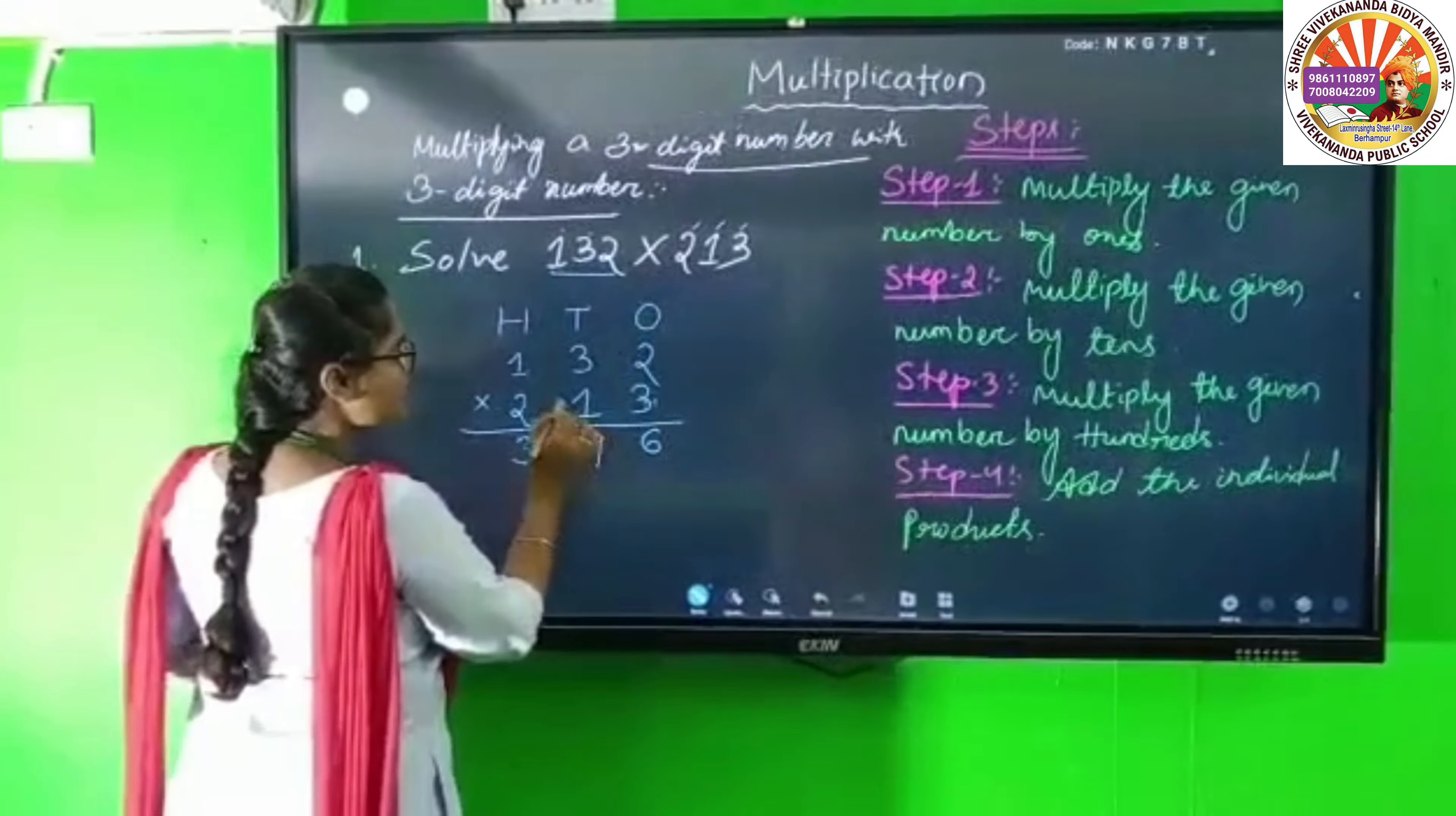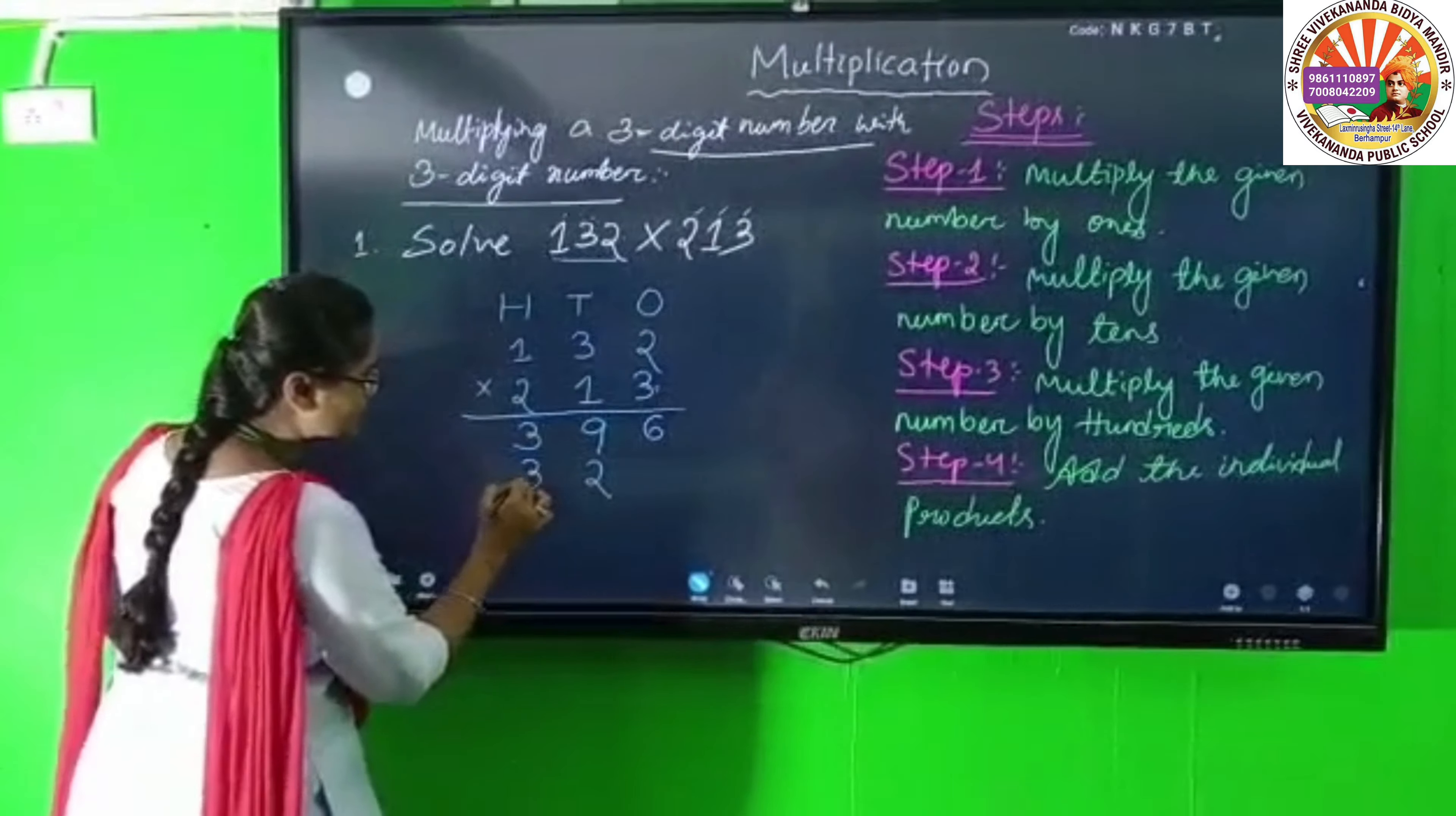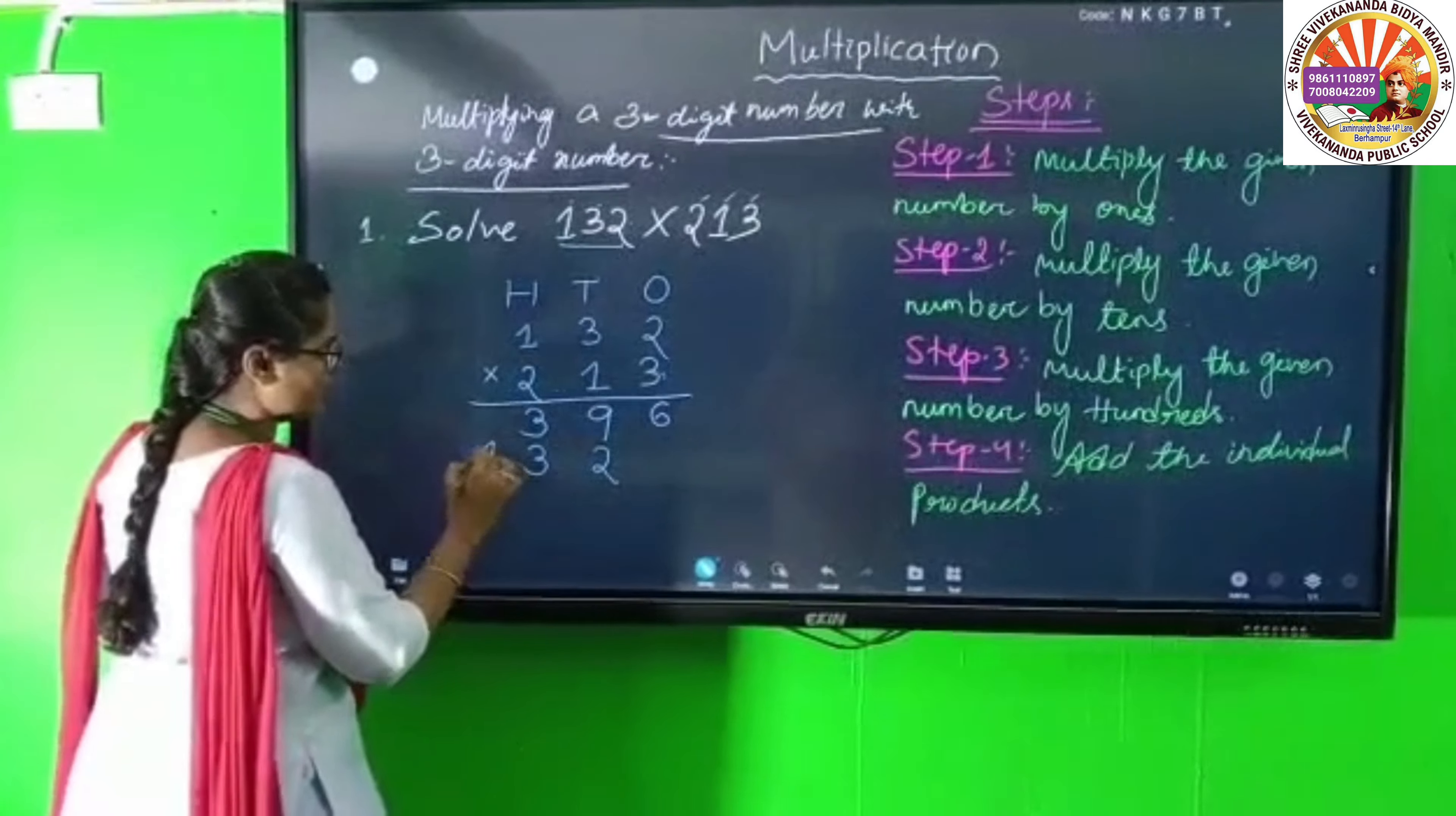Now for tens. 1 times 2 is 2, 1 times 3 is 3, 1 times 1 is 1. We get 132.